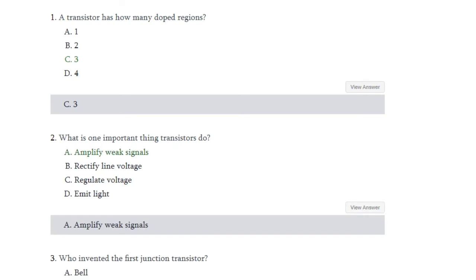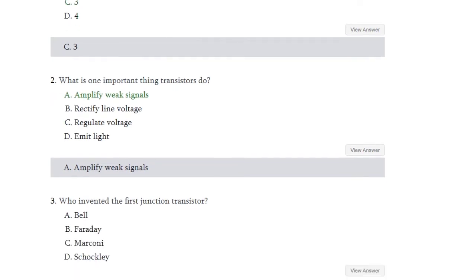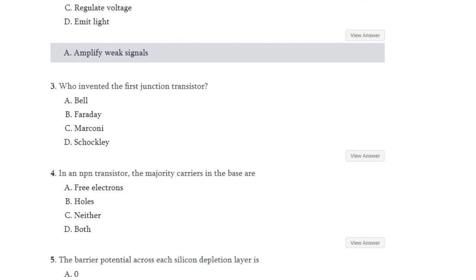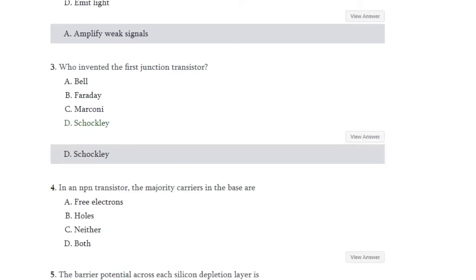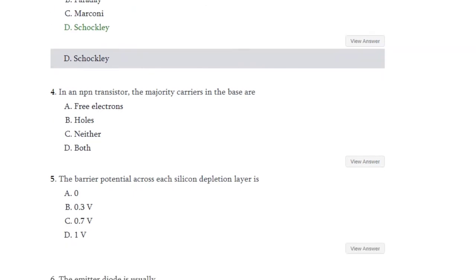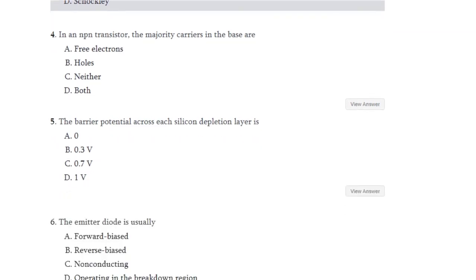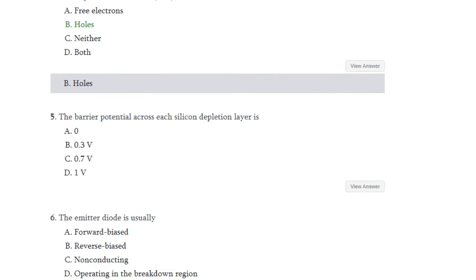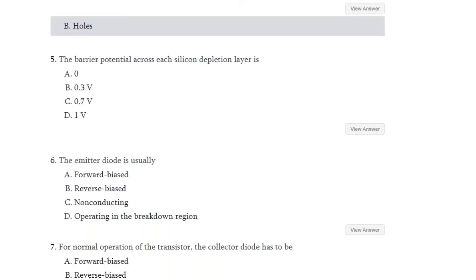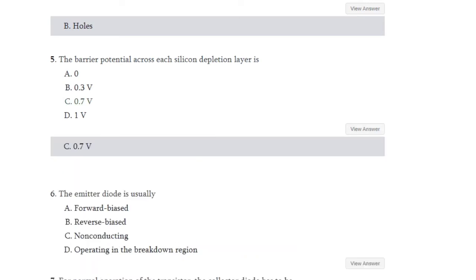Question number 3: Who invented the first junction transistor? Options are Pele, Faraday, Marconi, and Shockley. The answer is D — Shockley. Question number 4: In an NPN transistor, the majority carriers in the base are free electrons, holes, neither, or both. The answer is holes — these are the majority free carriers.